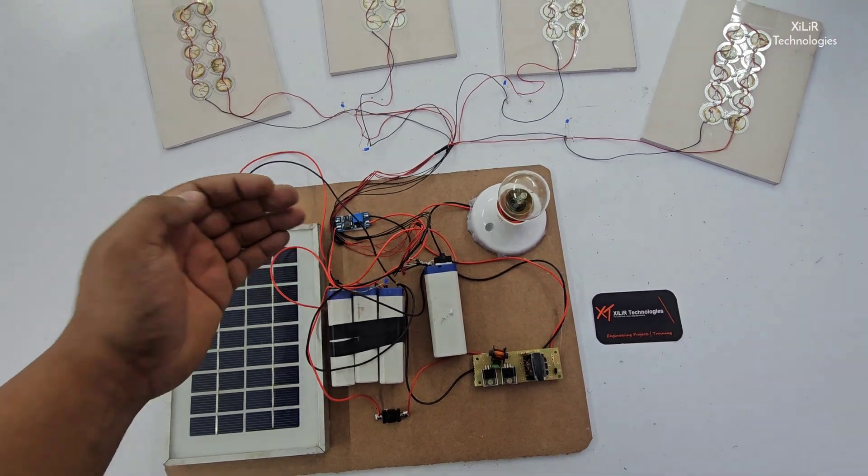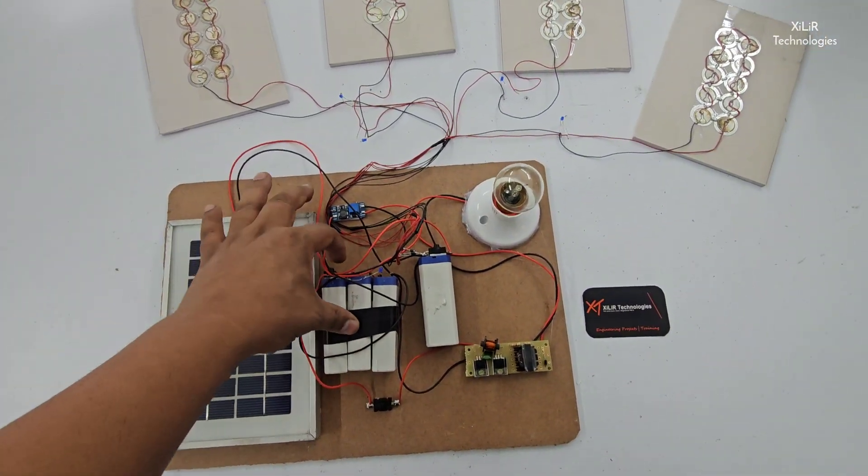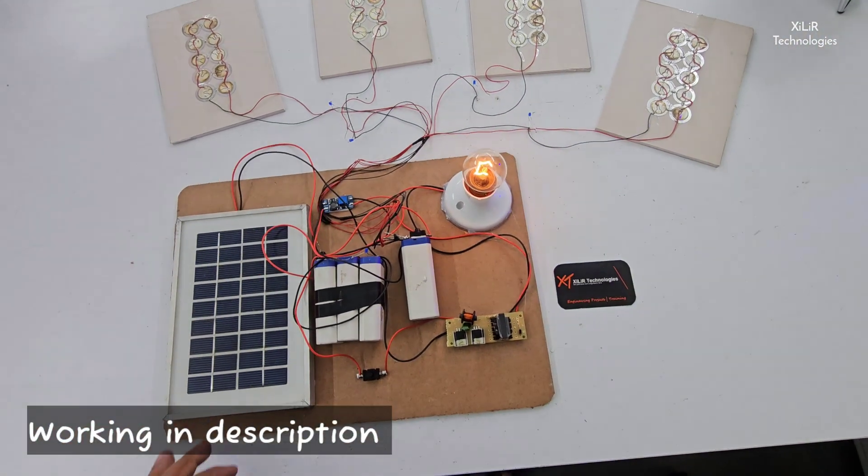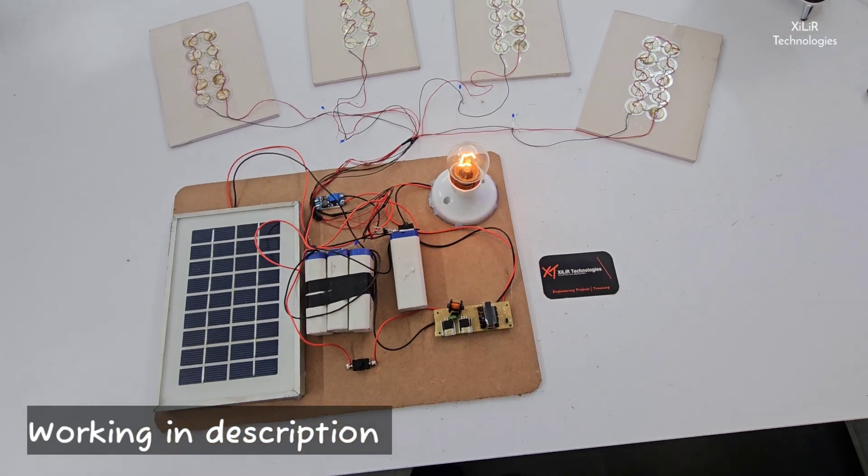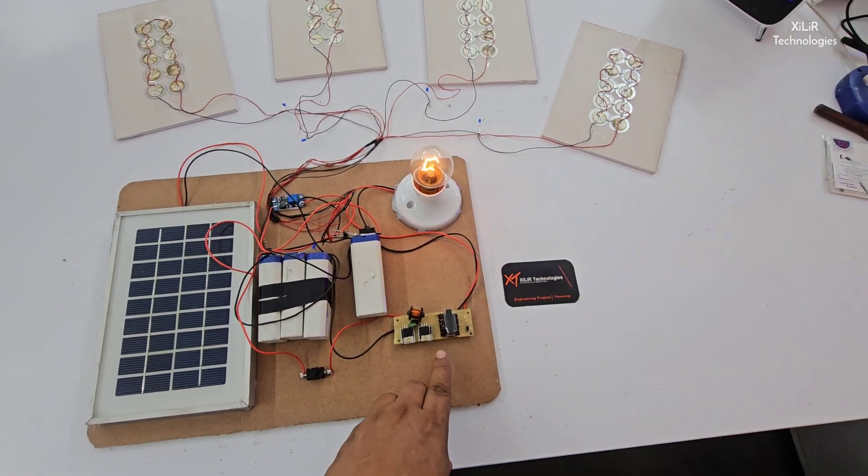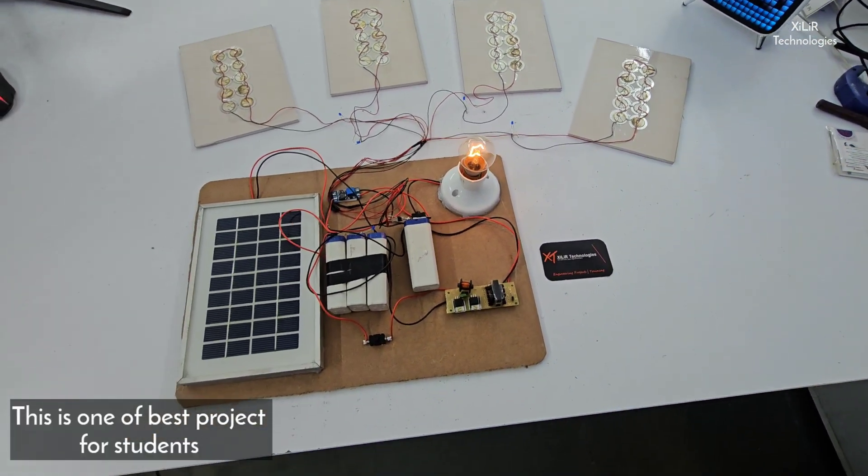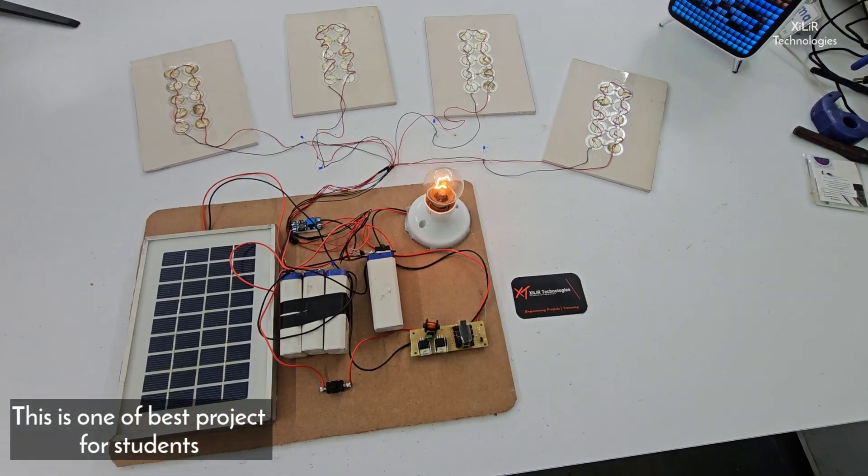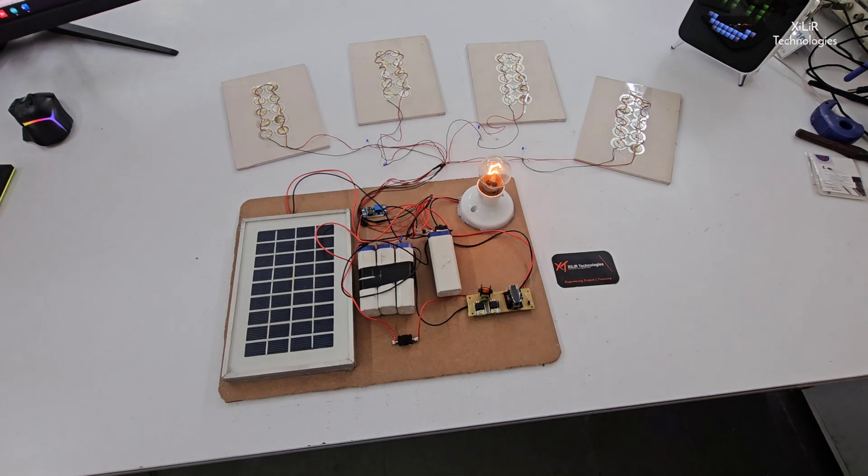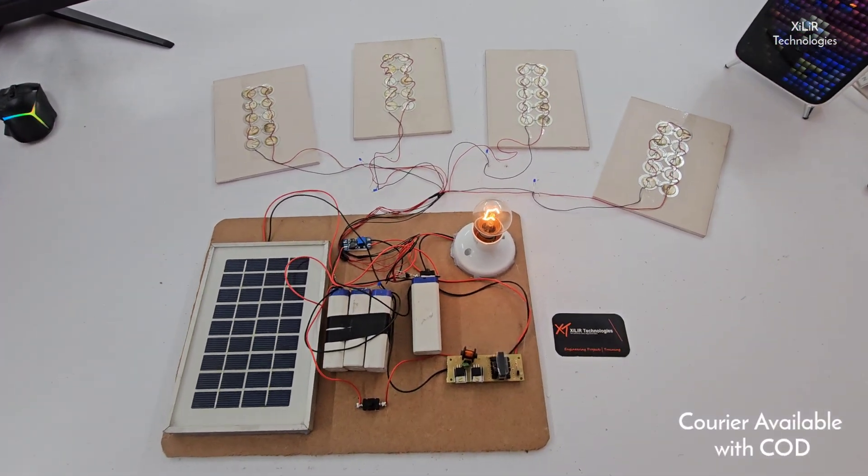So this 15 volt will charge each battery and these batteries are connected to one inverter module. This one is the inverter which is generating AC. So it will invert that 12 volt DC to 220 volt AC. Okay, so that's our project.